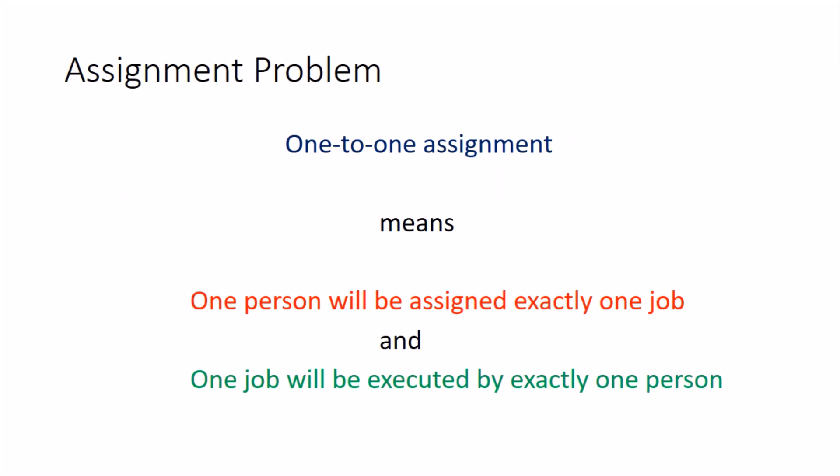Next important point we need to understand is how this assignment is going to be. This is going to be a one-to-one assignment, meaning one person will be assigned exactly one job. Though every person can do every kind of job, you cannot give more than one job to one person and you cannot divide the jobs into halves among more than one person.